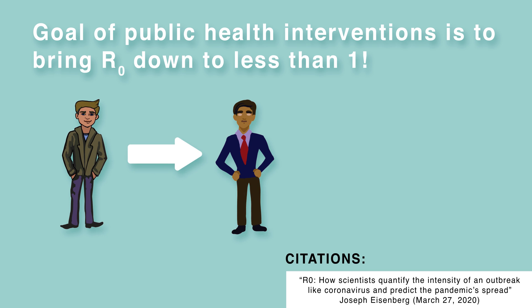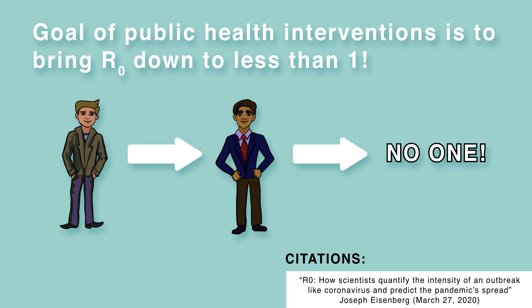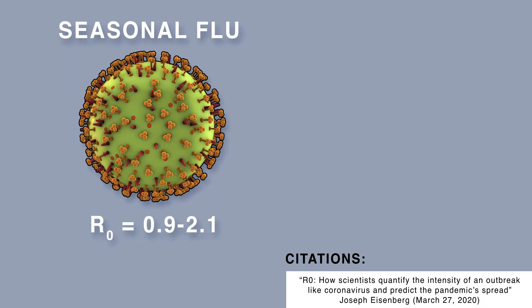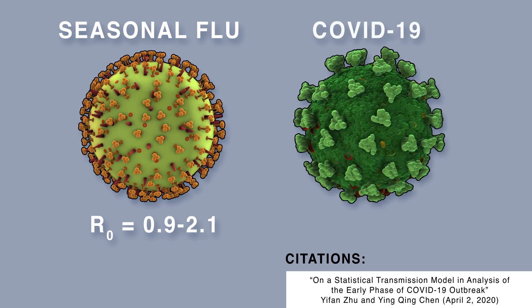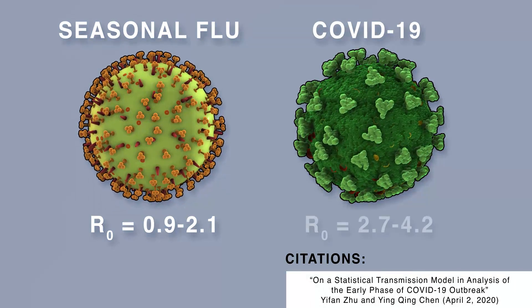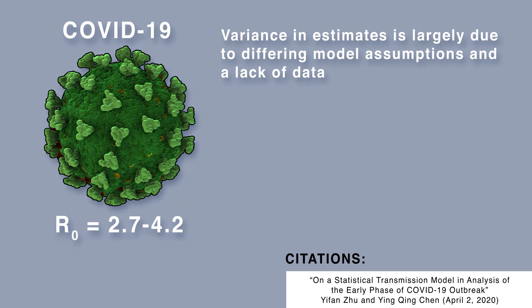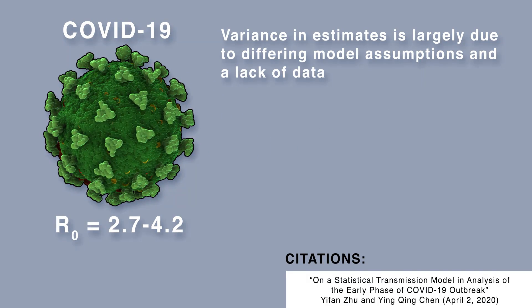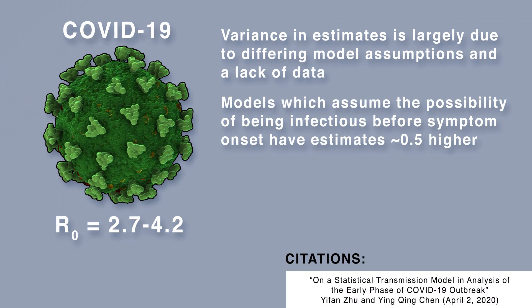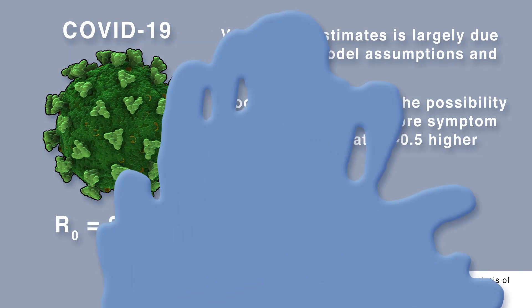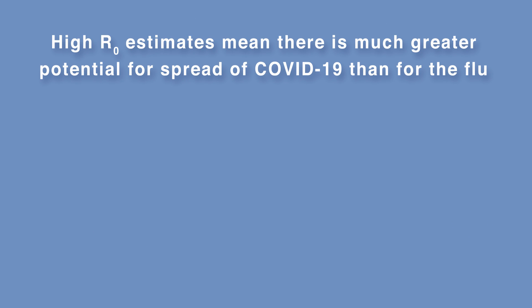The goal of public health interventions is to bring R-naught down to less than 1, as this would cause the disease to die out over time. The seasonal flu has an R-naught ranging from 0.9 to 2.1. There is a lot of debate about the R-naught of COVID-19, with estimates from more recent data ranging from 2.7 to 4.2. The variance in these estimates is largely due to differing model assumptions and a lack of data. For example, models which assume the possibility of being infectious before symptom onset have estimates that are around 0.5 higher.